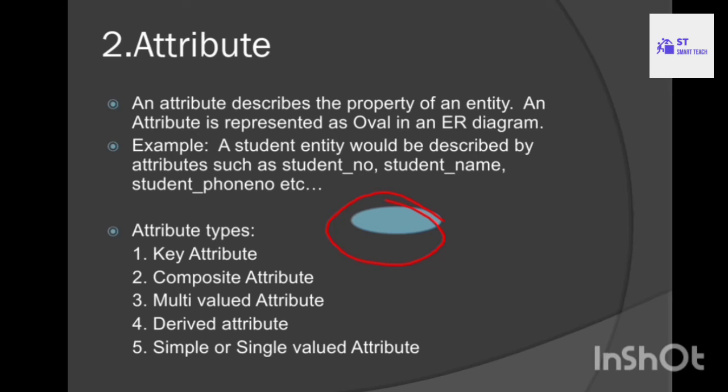Attribute types: there are five types of attributes. One is key attribute, composite attribute, multi-valued attribute, derived attribute, and simple or single-valued attribute. I will discuss these attribute types in a separate video.